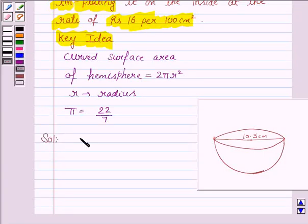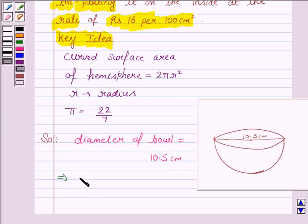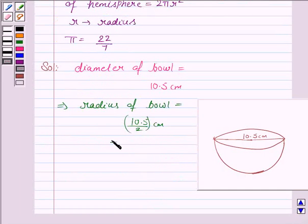We are given that the diameter of bowl which is in the shape of hemisphere is equal to 10.5 cm and we know that the radius is half of the diameter. So this implies the radius of bowl is equal to 10.5 upon 2 cm that is 5.25 cm.